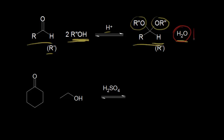If you decrease the concentration of this product, your equilibrium is going to shift to make more of it, and therefore we're going to form more acetal. Another thing you could do to shift the equilibrium to the right would be to increase the concentration of one of your reactants. You could increase the concentration of an aldehyde, and that would shift the equilibrium to the right and form more of your acetal product — several things you can do in the lab to increase your yield.